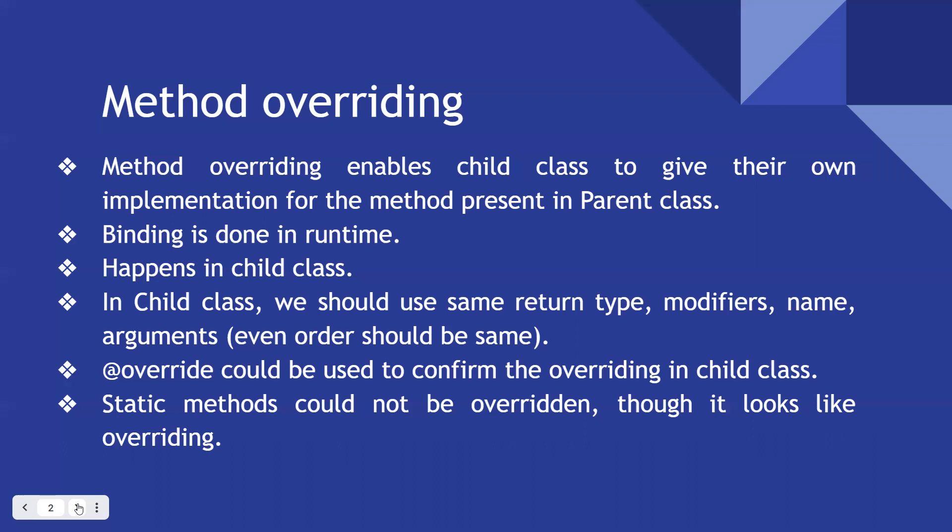In the child class, we should use the same return type, modifiers, name, arguments, and even order should be the same — an exact copy as in the parent class. In overloading you only consider method name and argument data types, whereas in method overriding you must match everything: return type, modifiers, method name, arguments, and order.